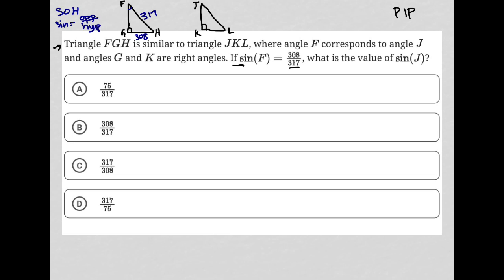The question asks: what is the value of the sine of J? We know that these two triangles are similar. What does it mean for two triangles to be similar? It means that the angles are congruent. So angle F and angle J are the same. Angles K and G are both 90 degrees, and angles H and L are the same.